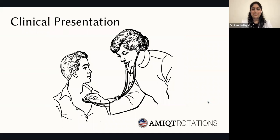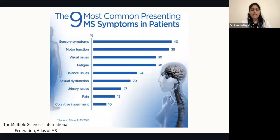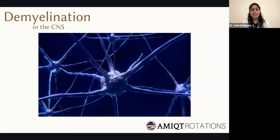Moving on to clinical presentation: how do patients with multiple sclerosis present in the clinic? Patients initially have a difficult time describing their symptoms, as symptoms appear and subsequently resolve, affecting different parts of the body at different points in time. The terms used are dissemination in time and dissemination in space. The most common presenting symptoms are sensory symptoms, motor function issues, and visual problems. I'll list the symptoms based on the part of the central nervous system affected, as this may be an easier way to remember the disease process.